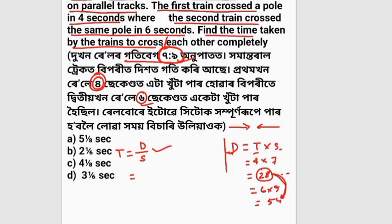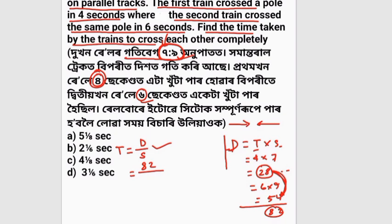The total distance is 28 plus 54, which gives 82 units. The combined speed of the two trains is 7k plus 9k = 16k. Time taken to cross each other equals total distance divided by combined speed.